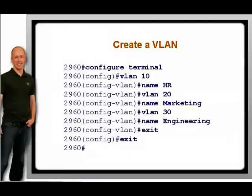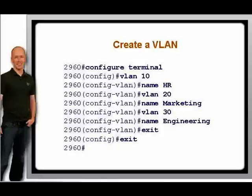The VLAN configuration — names and numbers — is not stored in the running config or startup config file in NVRAM. Rather, it is stored in flash memory in a special file called vlan.dat. This means that it is possible to erase the startup config file, reload the router, and be confused by the reappearance of VLANs that you thought you just deleted.